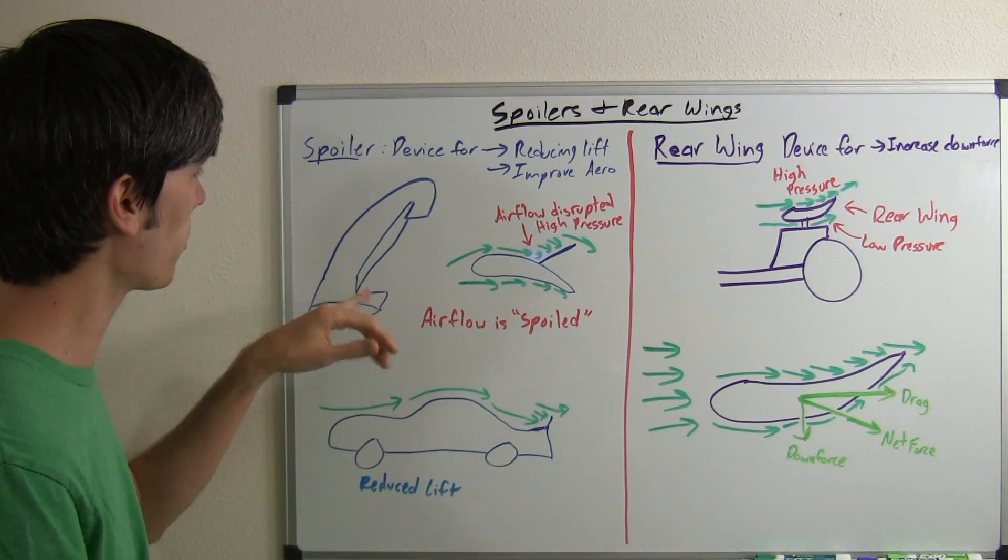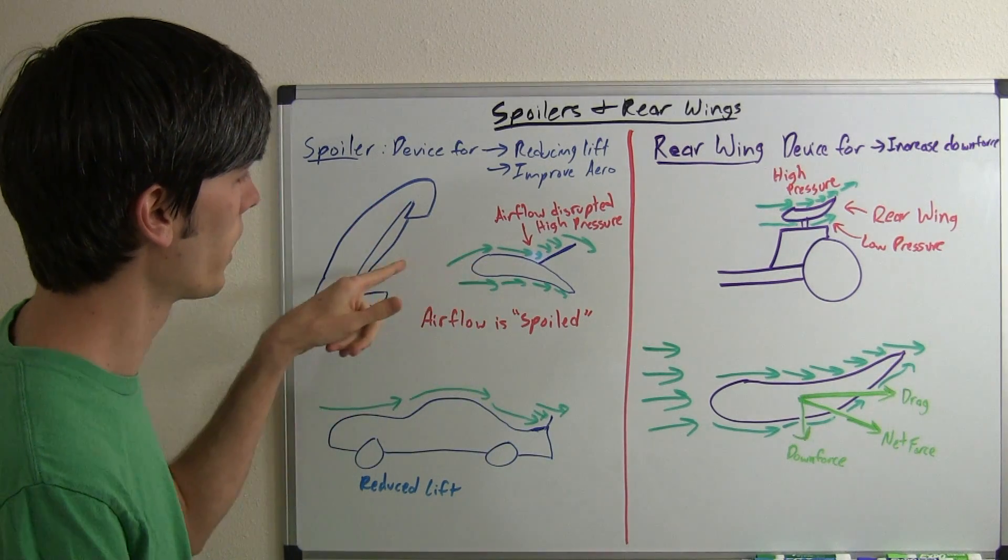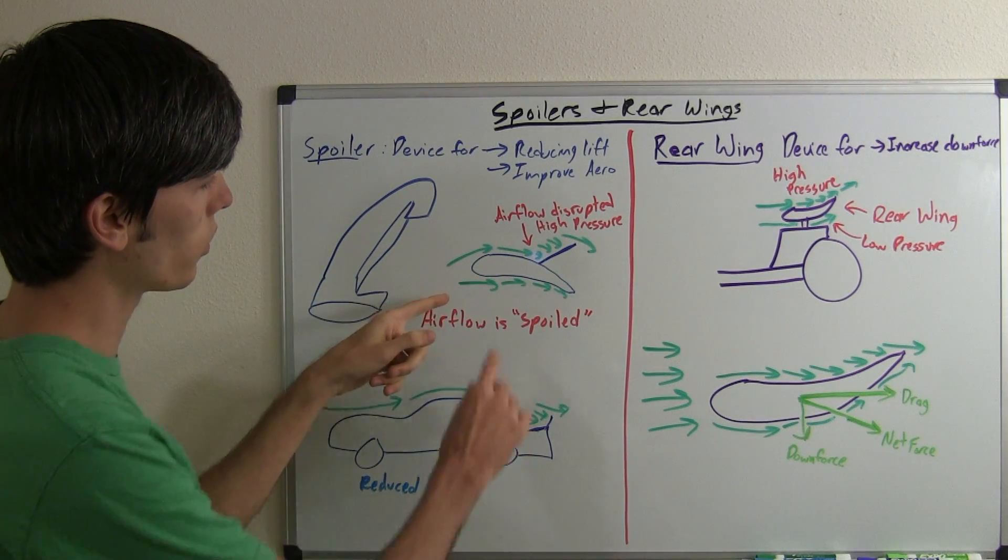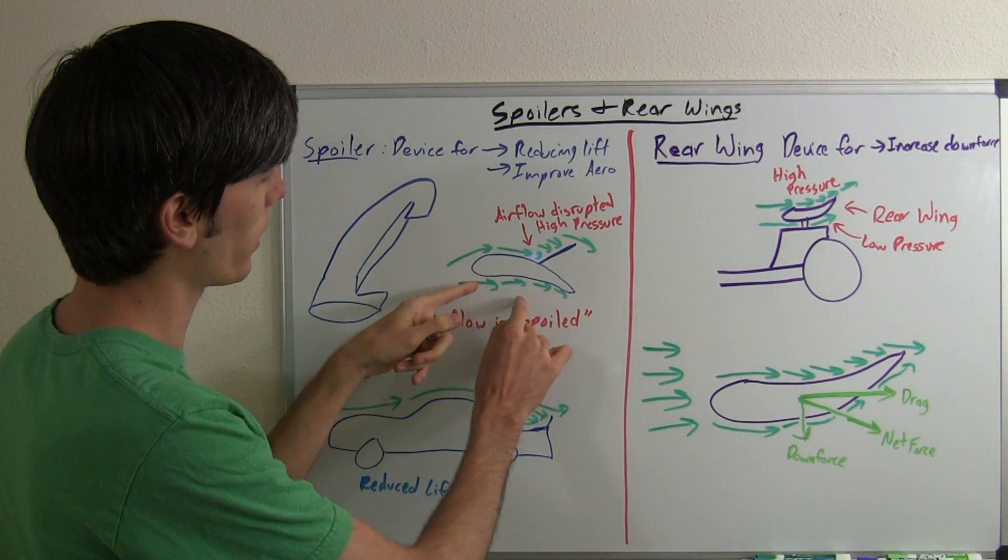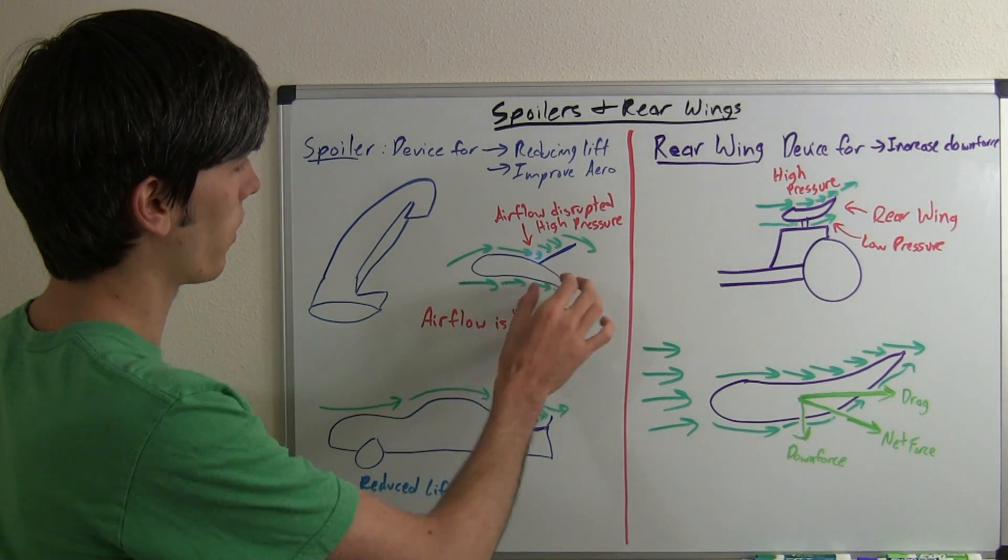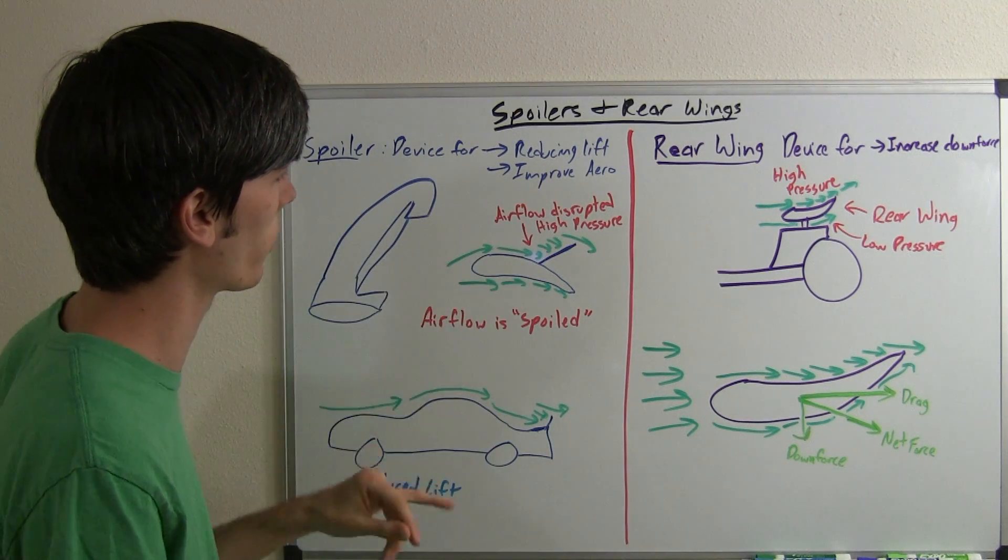So when that plane is landing it lifts up this flap on the back of the wing. That's actually a spoiler and what that's doing is disrupting the airflow that's flowing over the wing. So normally there's a high pressure area underneath the wing and a low pressure area on top of the wing.